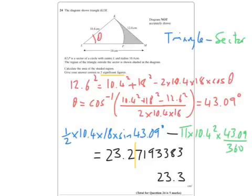So pretty straightforward, actually, in the end — as long as you can spot that you've got to find that angle theta. That's crucial, but then it's just the area of the triangle minus the area of the sector, and pretty straightforward.